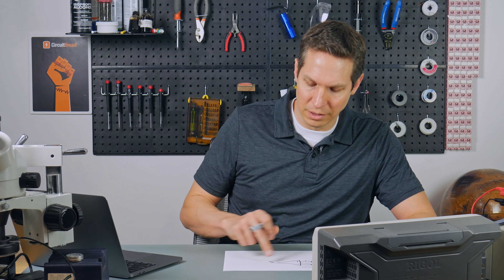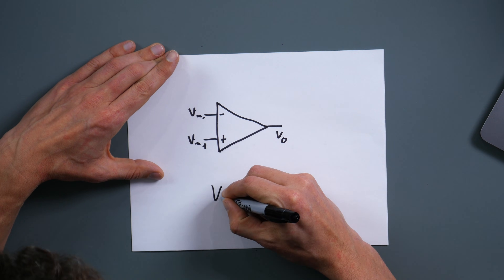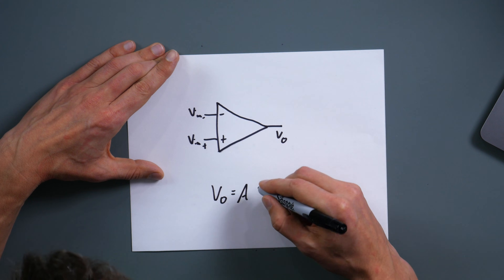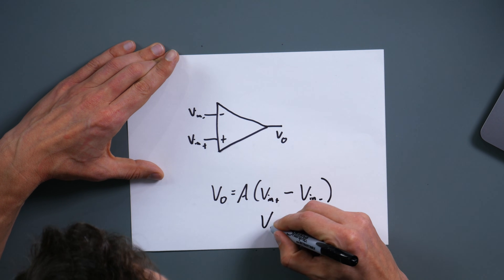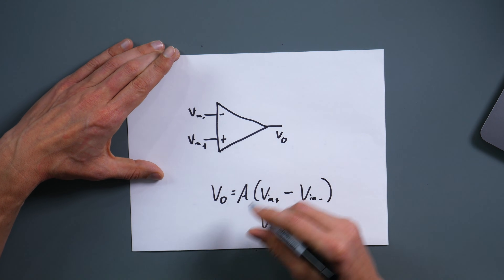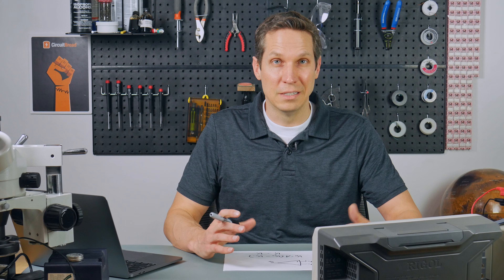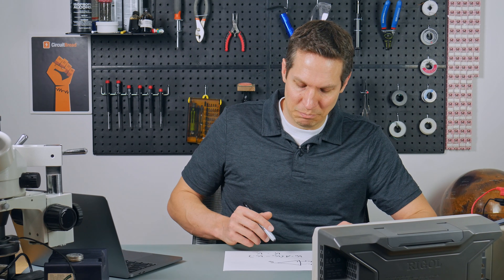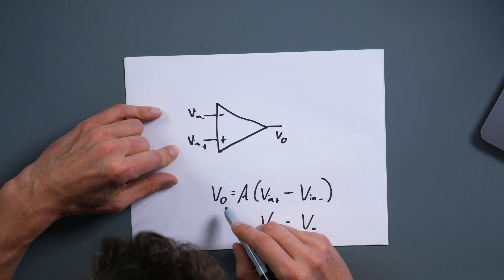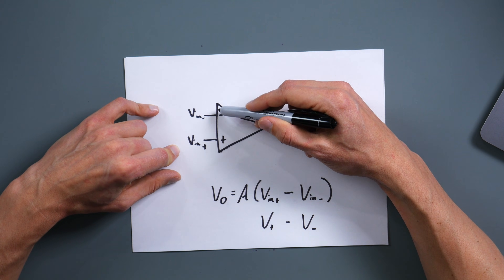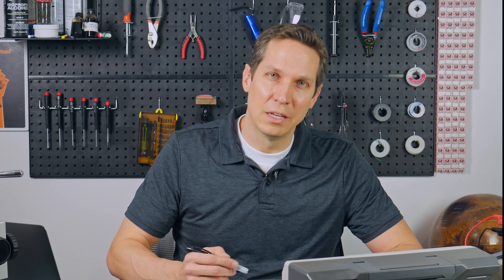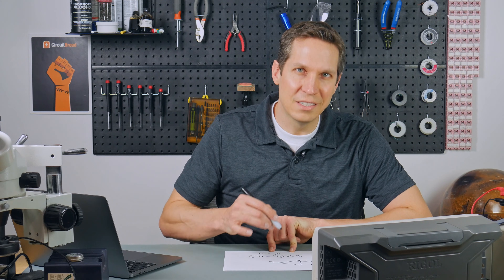An op amp is simply an amplifier. The way it works is you have an equation that drives the output: V out equals your amplifier gain A times (V in plus minus V in minus), or simply A times (V+ minus V−). That A represents gain, which in an ideal operational amplifier is infinity. Any difference between V in plus and V in minus is going to yield an incredibly large output.